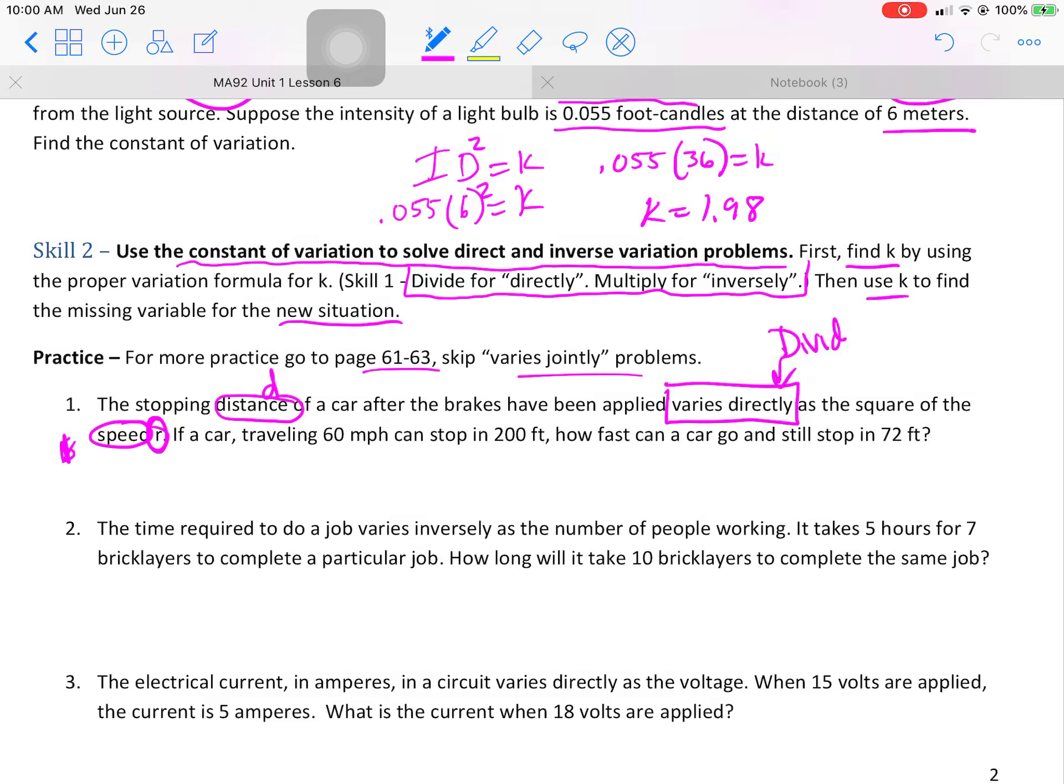The first thing, D, over the second thing, speed R, and it's squared. That's going to equal k. So then it tells me that it's traveling at 60 miles per hour. That's a speed. And it can stop at 200 feet. That's a distance. Find k.